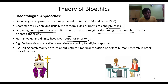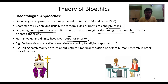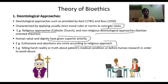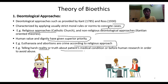Examples under this approach include euthanasia and abortion, which are considered crimes according to the religious approach. These are not legal in some countries and are generally considered unethical from an ethical point of view. Another example is telling harsh truths about a patient's medical condition or before human research, in order to avoid abuse.